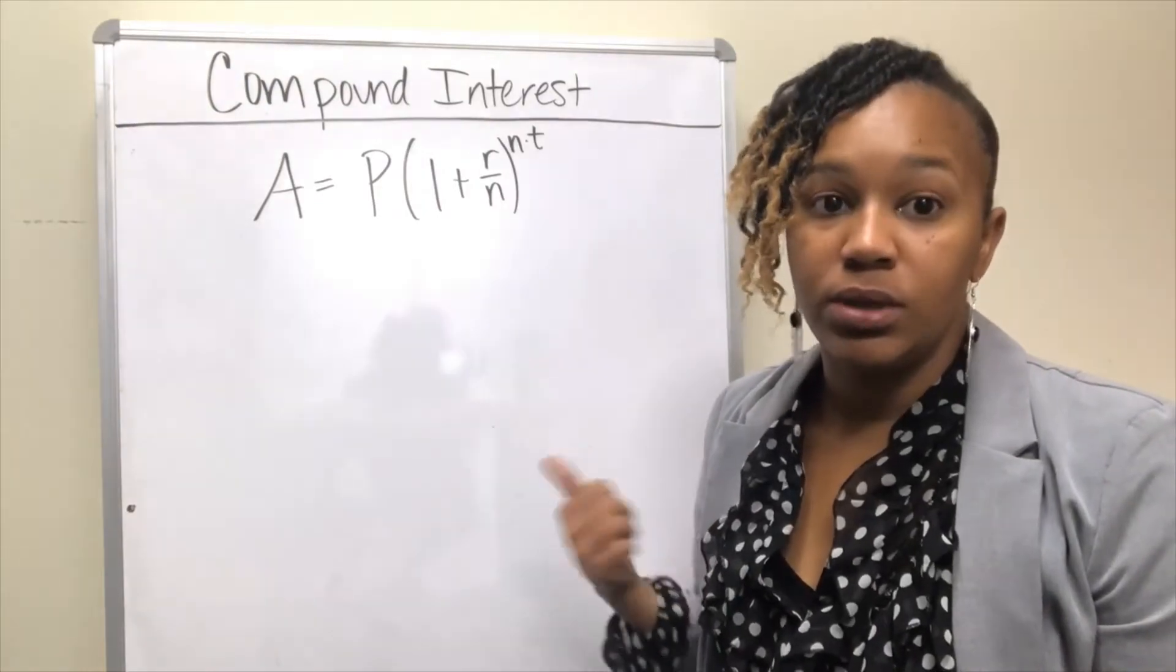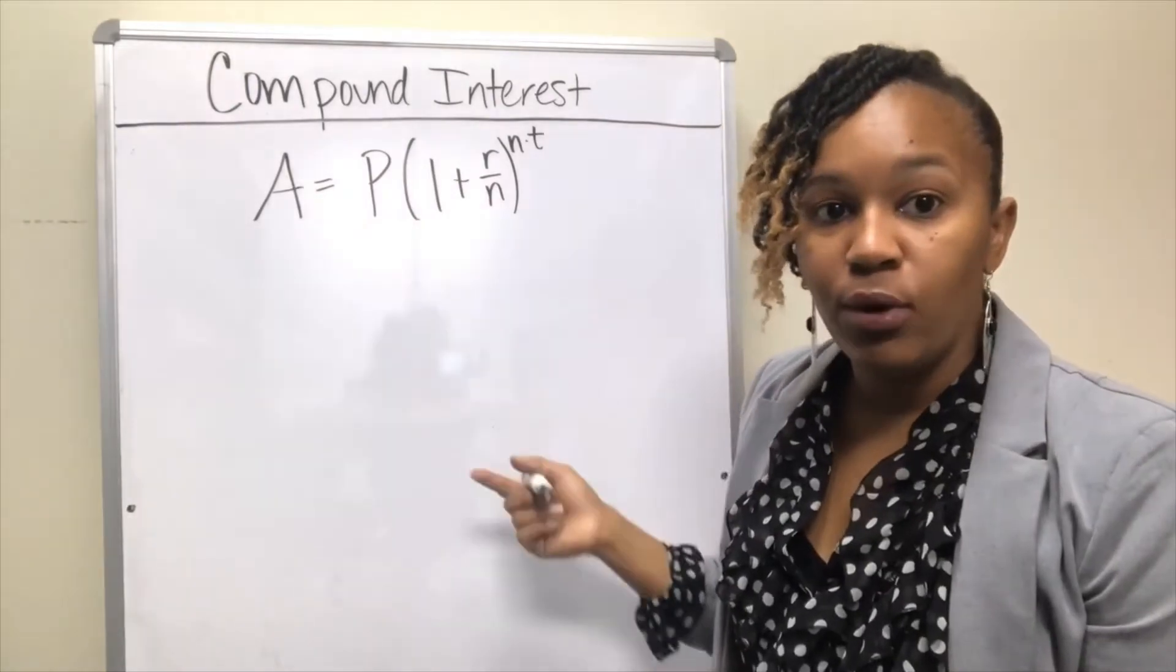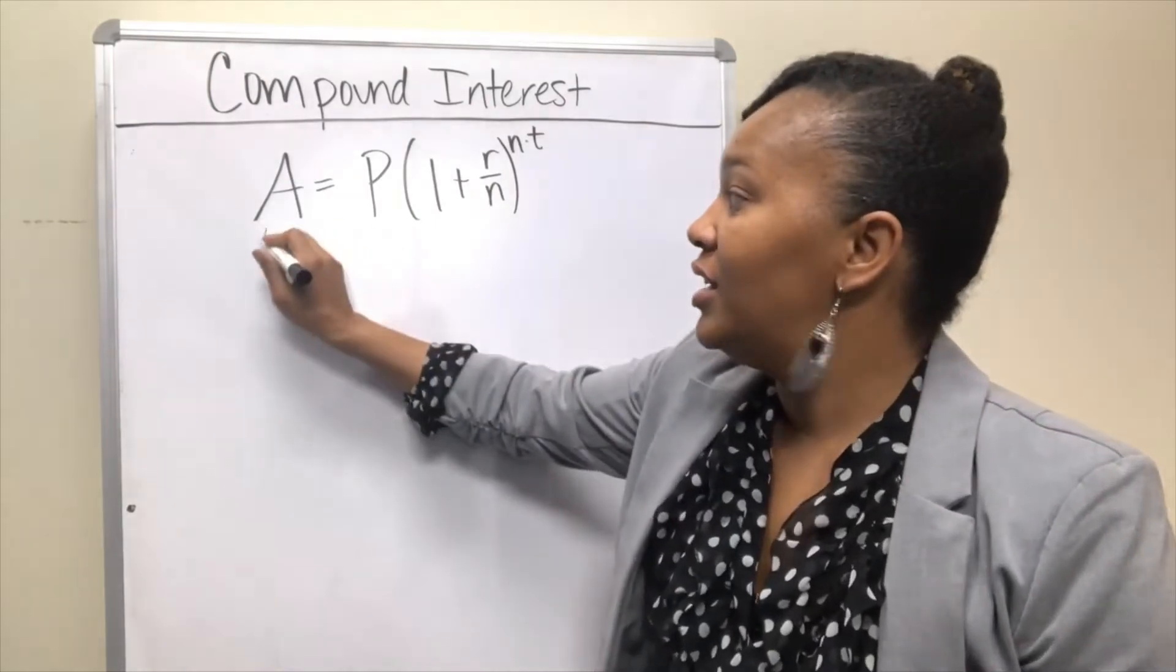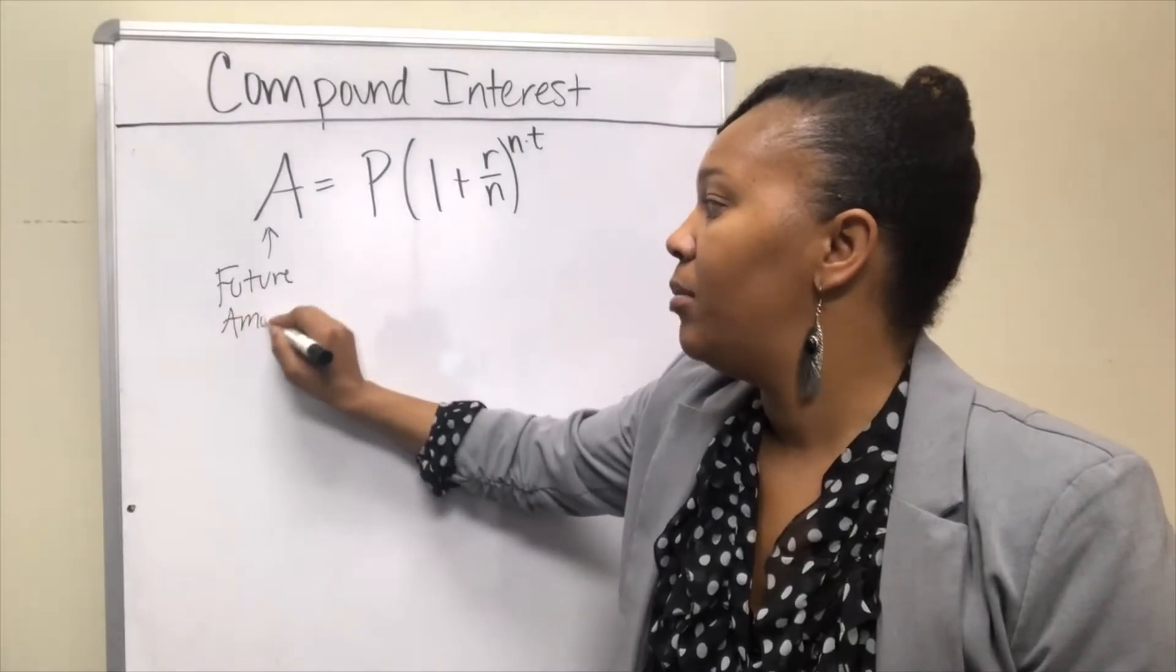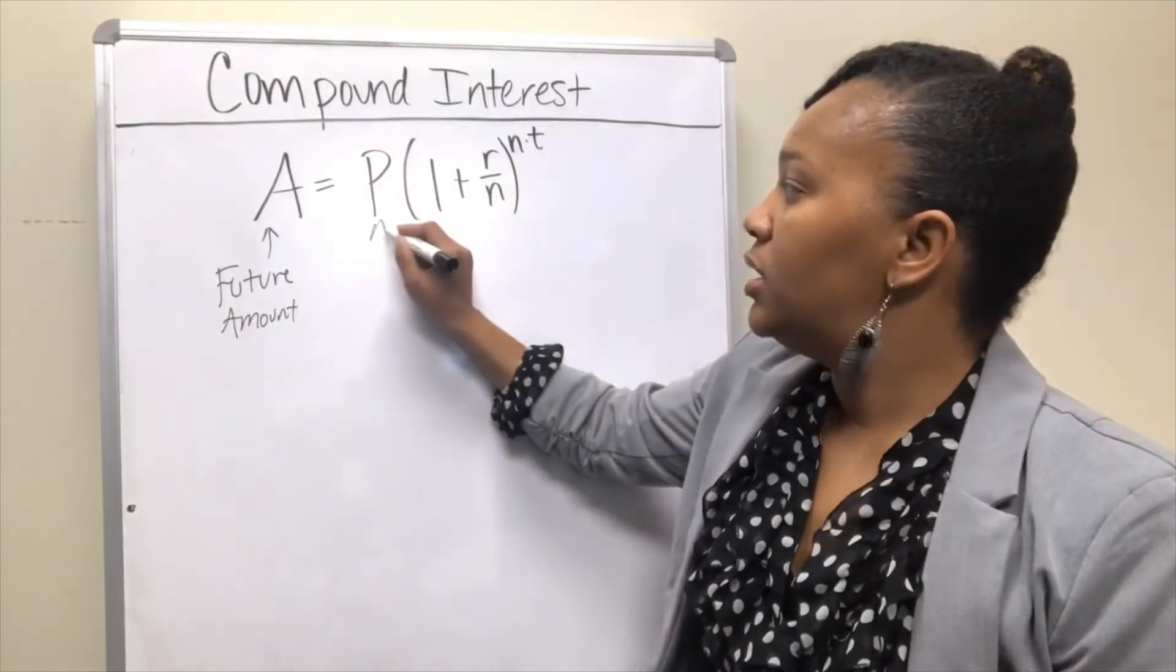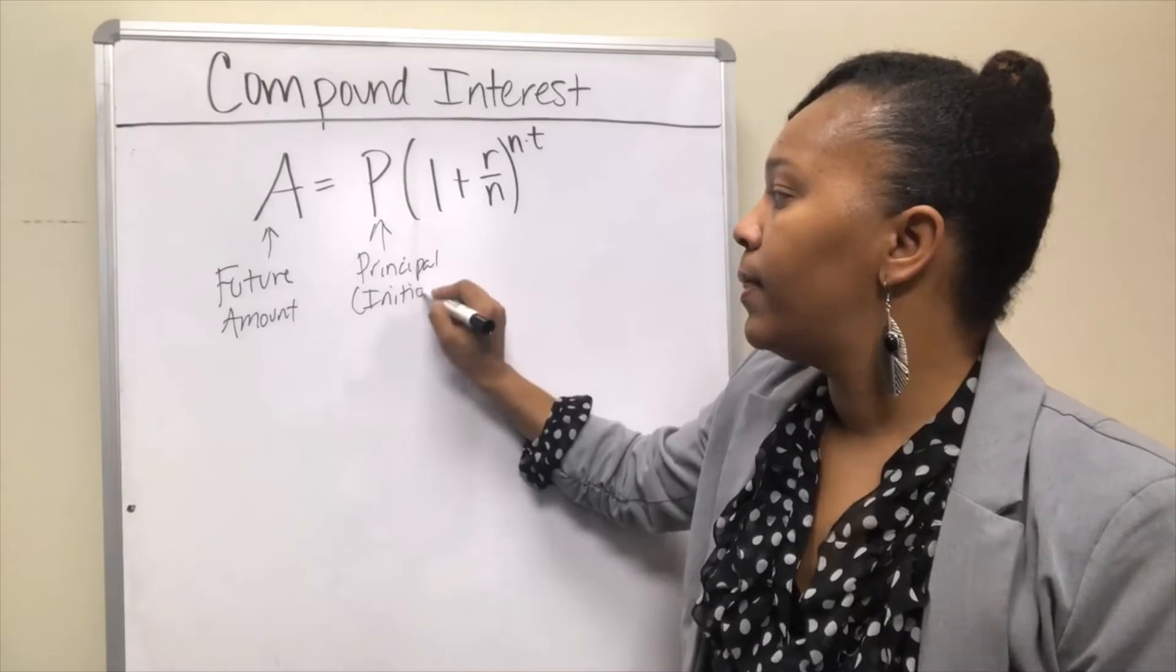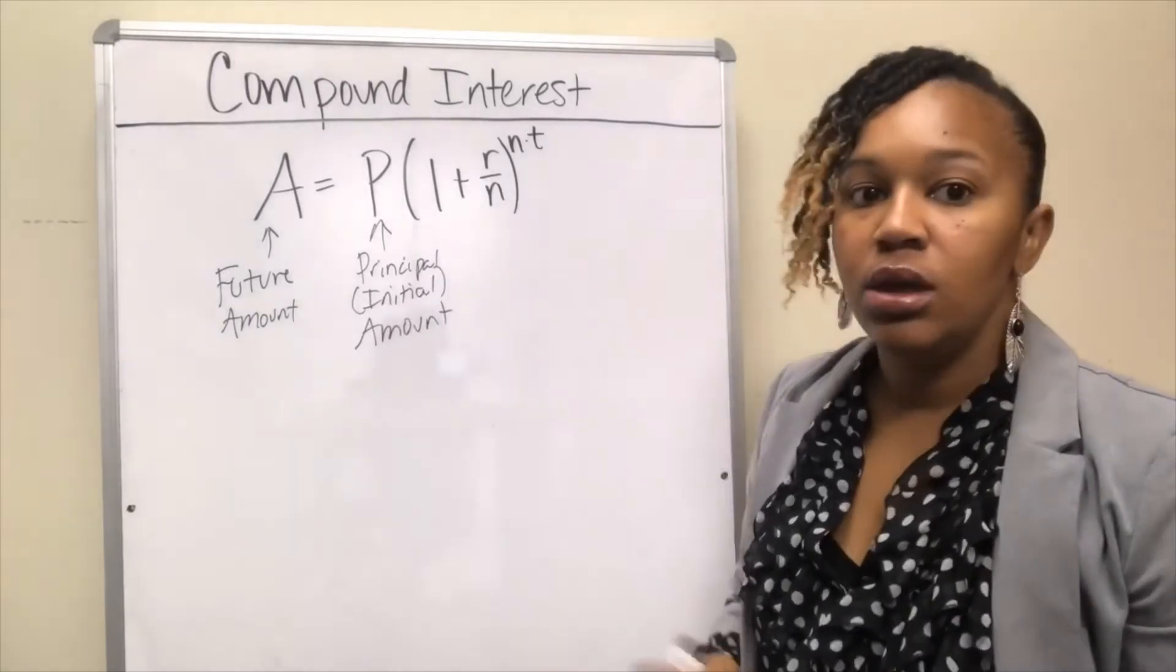In that case, you can use what's called compound interest. What I have up here is the compound interest formula, and we need to know what each of these letters stand for. This capital A stands for the future amount—that's how much the money will be worth after a certain amount of time. P is the principal or initial amount, how much you're originally going to invest and deposit.